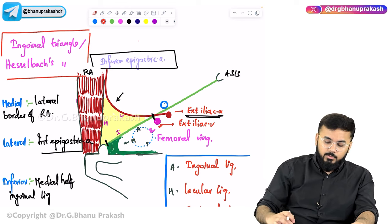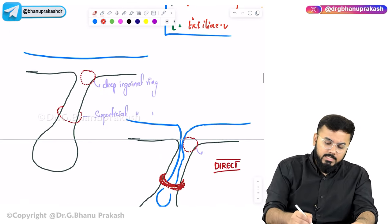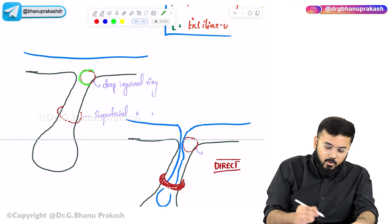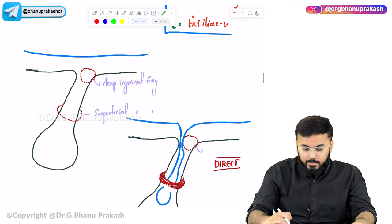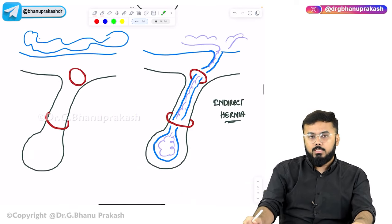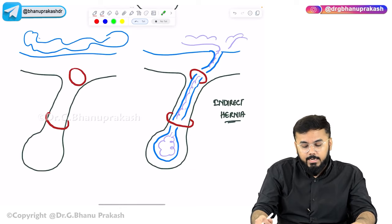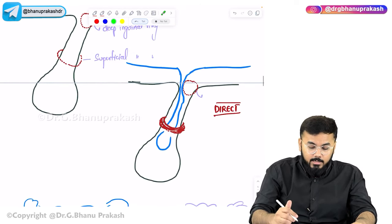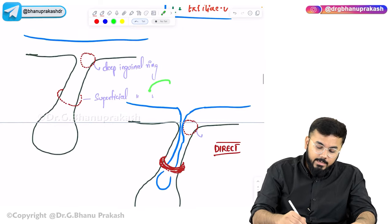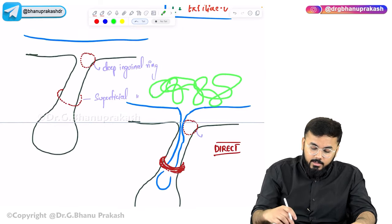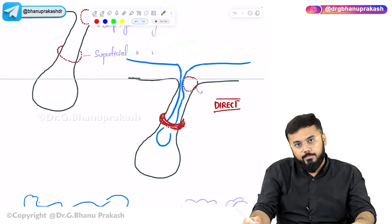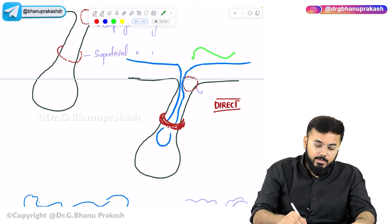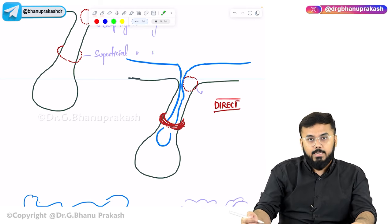In direct inguinal hernia, the intestinal contents protrude directly through the superficial inguinal ring, passing medial to the inferior epigastric vessels. In indirect inguinal hernia, contents pass through the deep inguinal ring first and then the superficial inguinal ring, lateral to the inferior epigastric vessels.